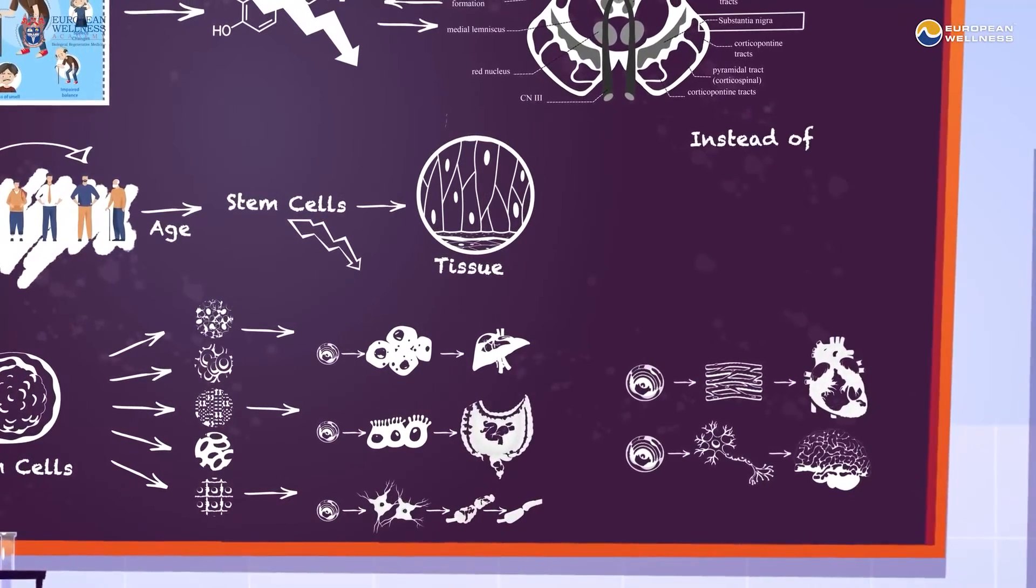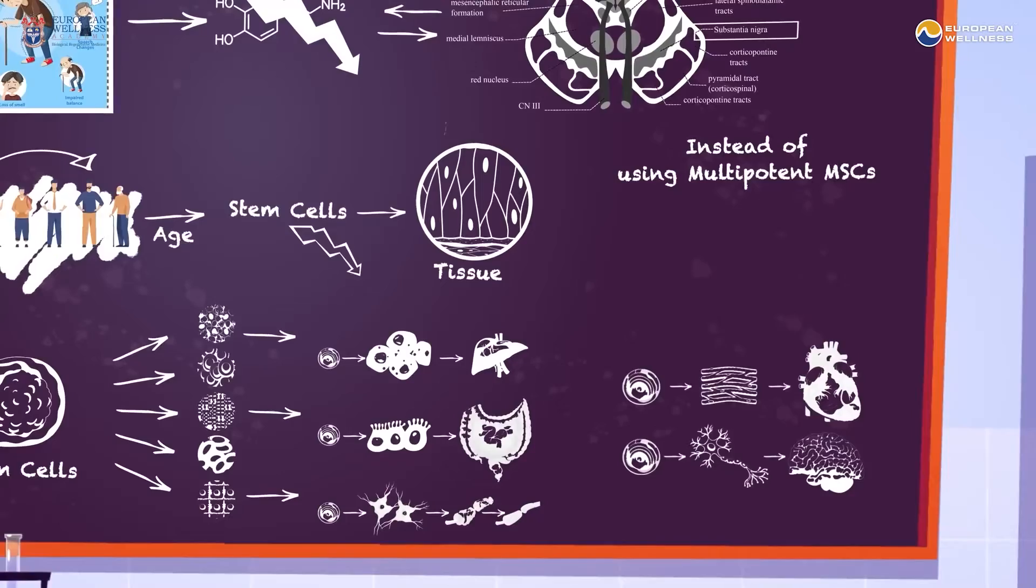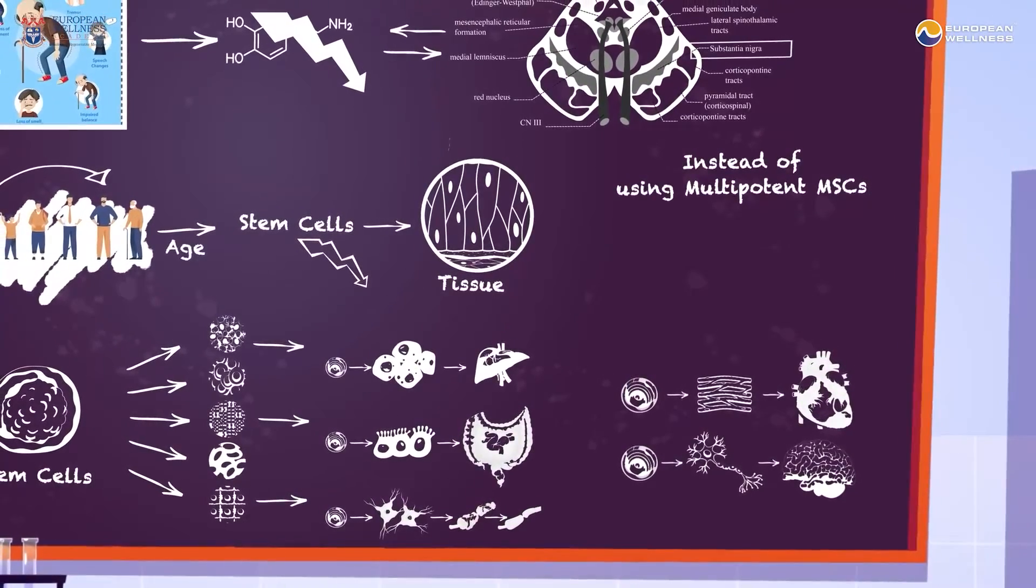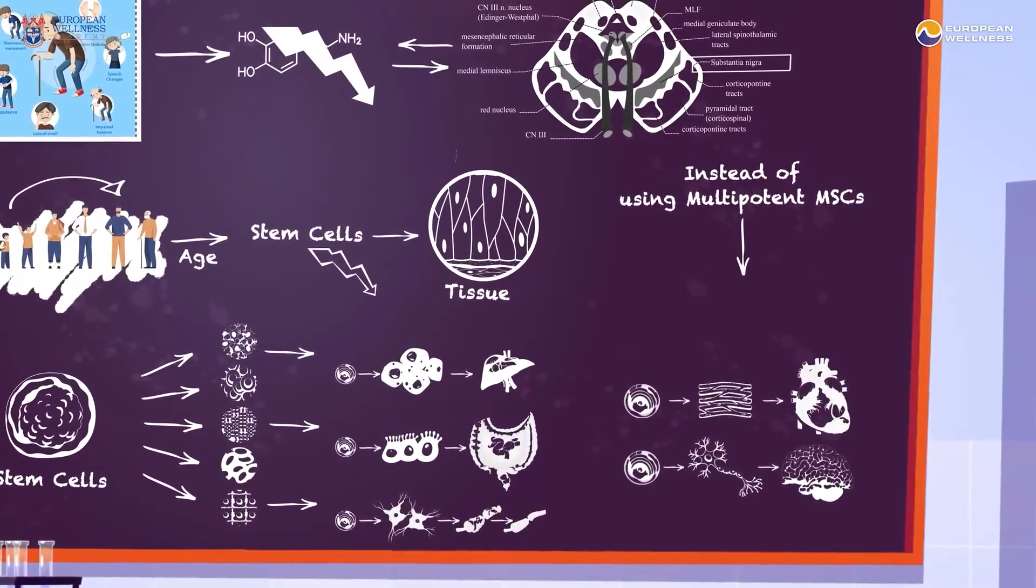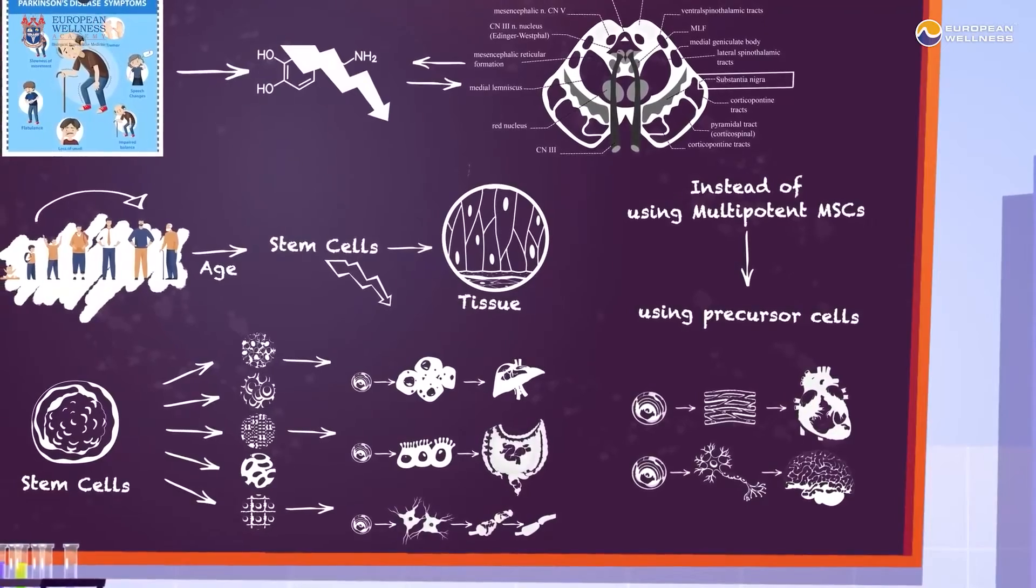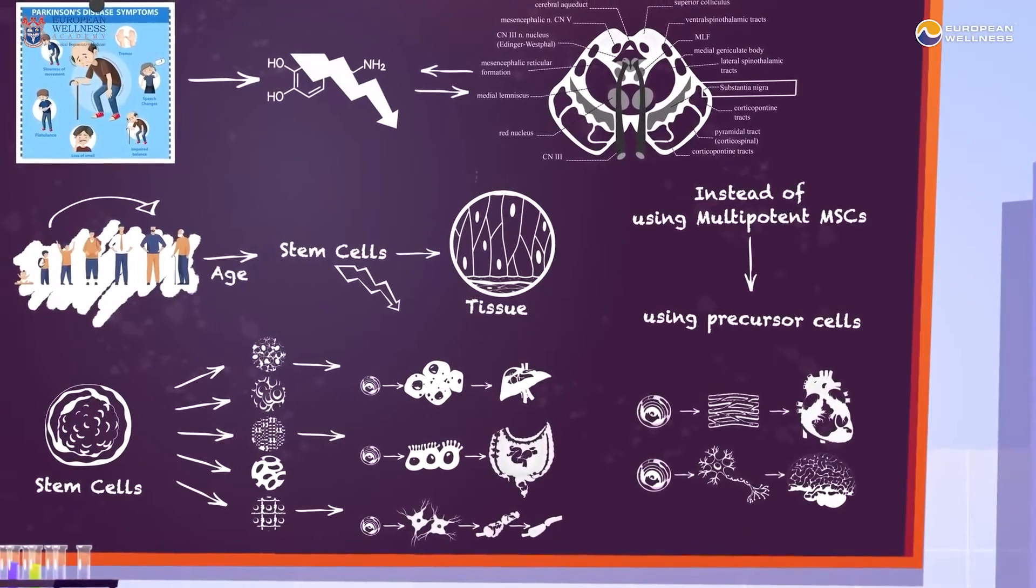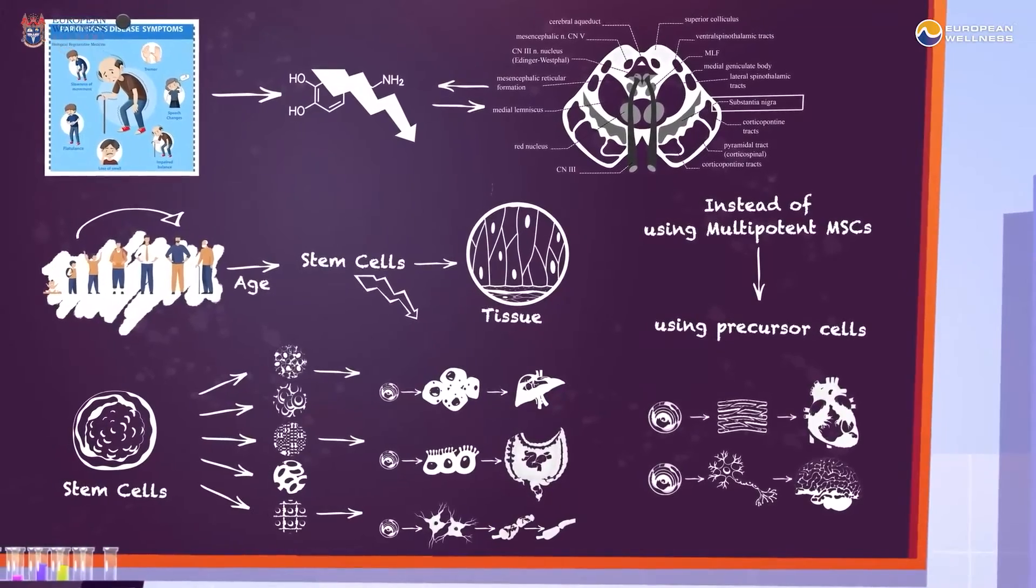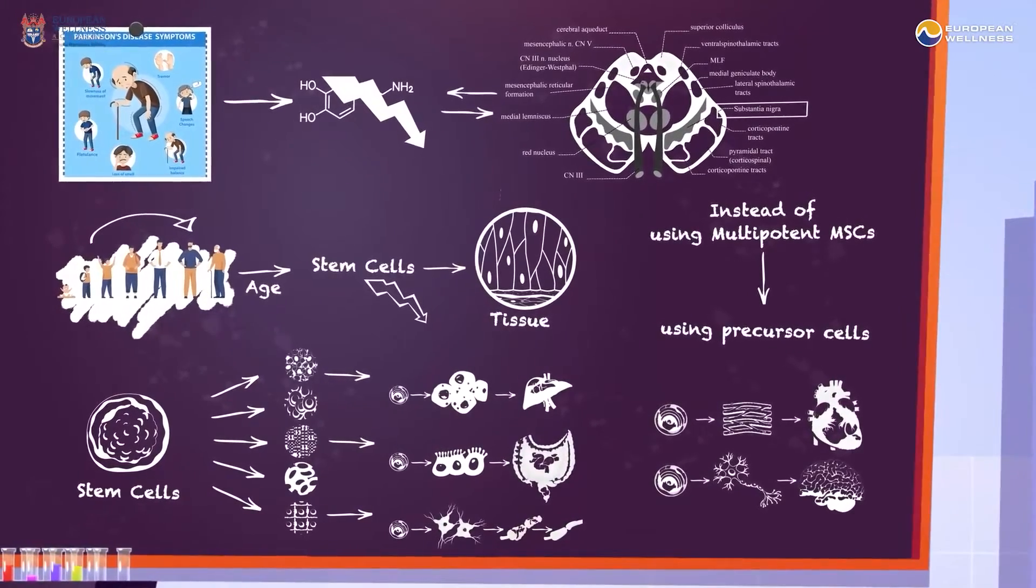Instead of just using multipotent mesenchymal stem cells, also known as stromal cells, which are very far from the final differentiation, using precursor cells, which are partly differentiated but in their final stage of differentiation, has higher targeted therapeutic benefits.